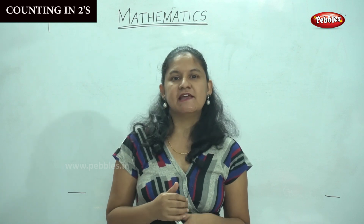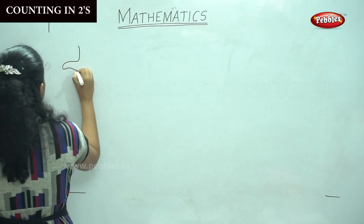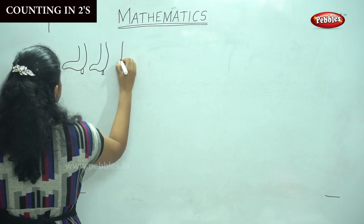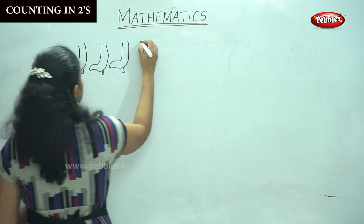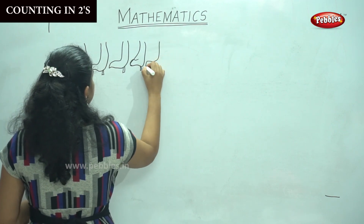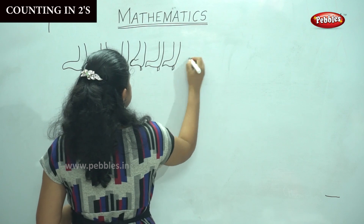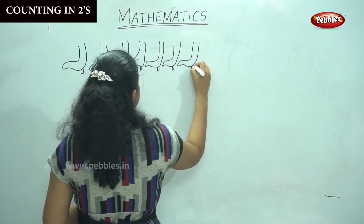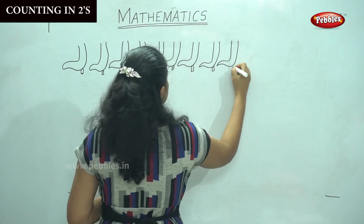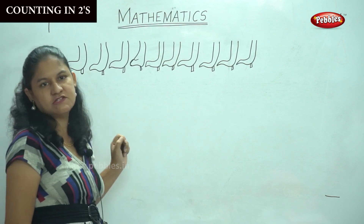So before that we will do counting in twos. I have some shoes with me. So I have one, two, three, four, five, six, seven, eight, nine. Now I have ten odds of shoes with me.